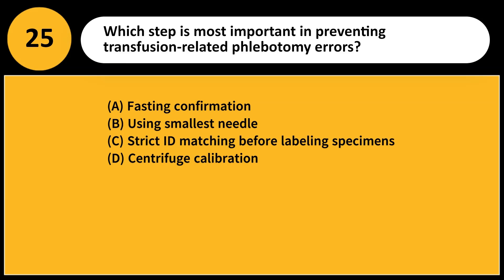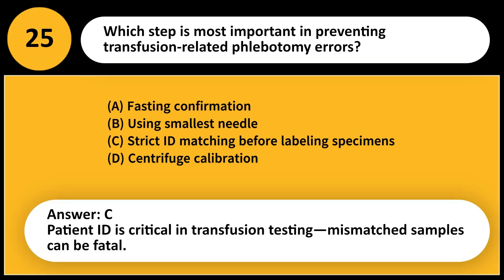Which step is most important in preventing transfusion-related phlebotomy errors? A. Fasting confirmation. B. Using smallest needle. C. Strict ID matching before labeling specimens. D. Centrifuge calibration. Answer: C. Patient ID is critical in transfusion testing. Mismatched samples can be fatal.